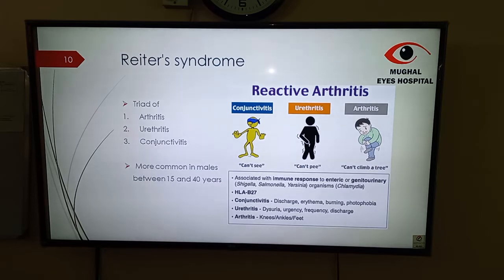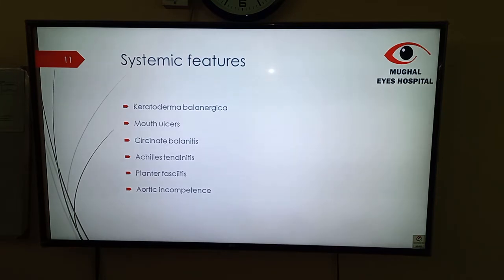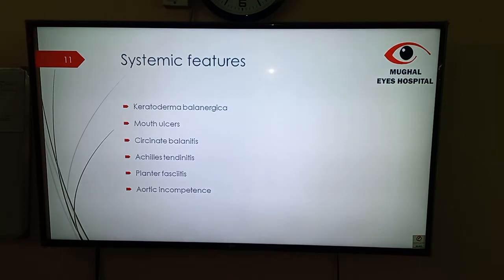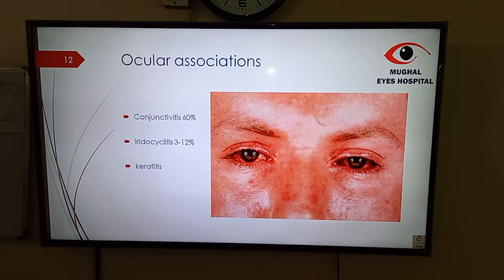There is urethritis that can lead to dysuria, urgency, frequency, and discharge. Arthritis can involve the knees, ankles, or feet, and can lead to peripheral or extra-articular arthritis. Large joints can also be involved. Systemic features include keratoderma blennorrhagica — ulceration of the palms and soles of the feet — mouth ulcers, circinate balanitis, Achilles tendonitis, and plantar fasciitis. Cardiac features include aortic incompetence. Ocular associations: conjunctivitis in 60% of cases, iridocyclitis in 3-12% of cases, and keratitis.